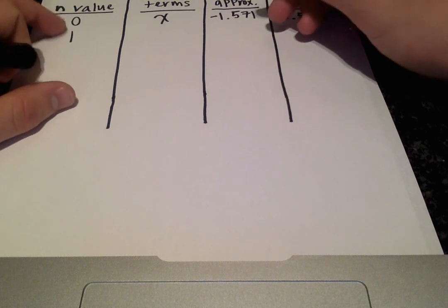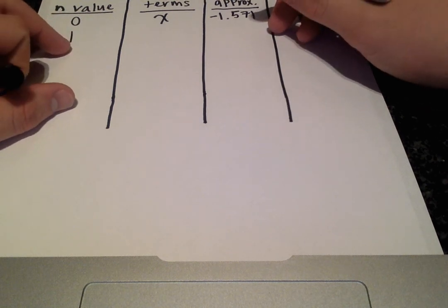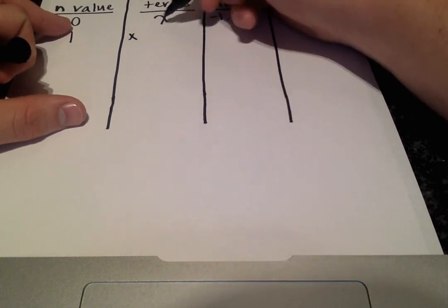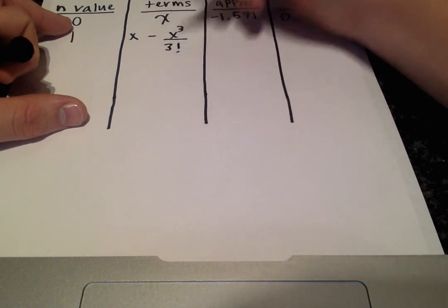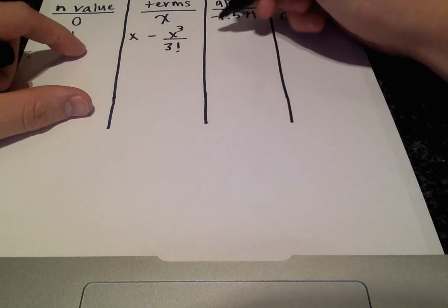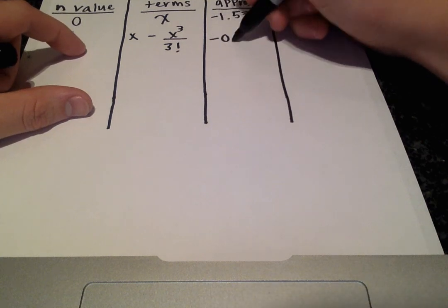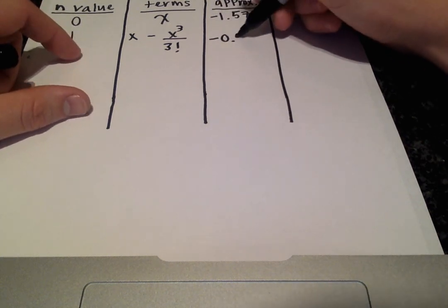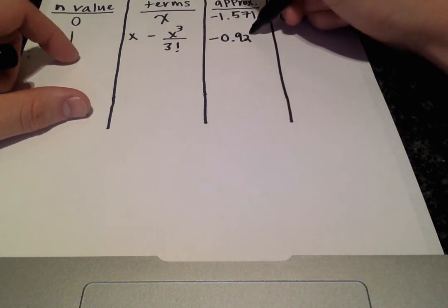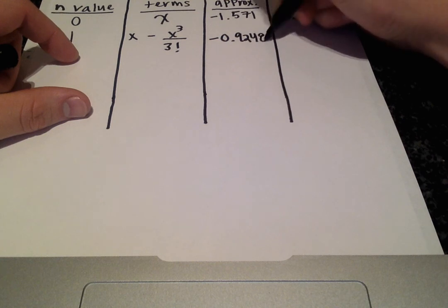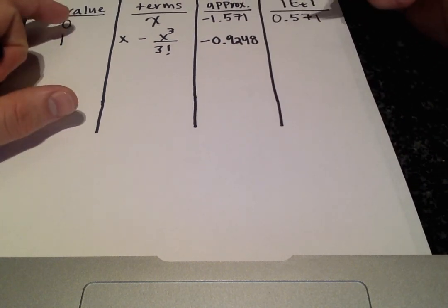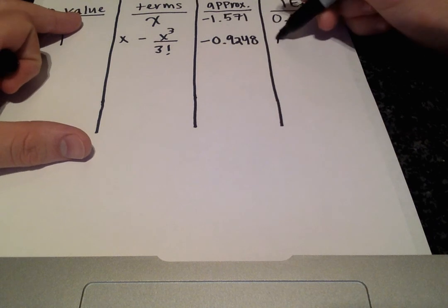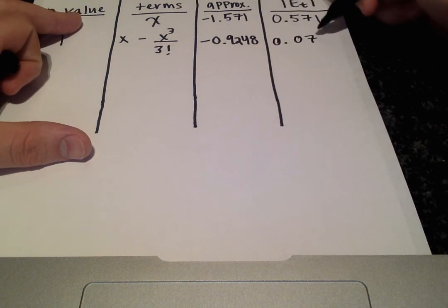When n equals 1, we take our previous term and add on the next term. The approximation becomes negative 0.9248, and the absolute true error is 0.075.